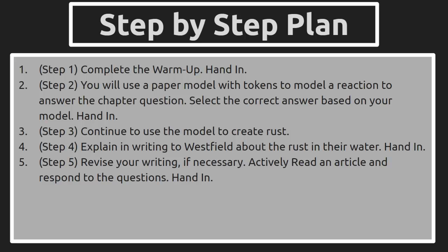In step three you're going to continue to use the model to create molecules of rust. From that, in step four, you'll be able to explain in writing to Westfield about the rust in their water, and then you'll want to hand that in. Step five gives you a chance to revise your writing, and then actively read an article about a scientist who preserves art using information from this unit, then respond to the questions and hand those in.